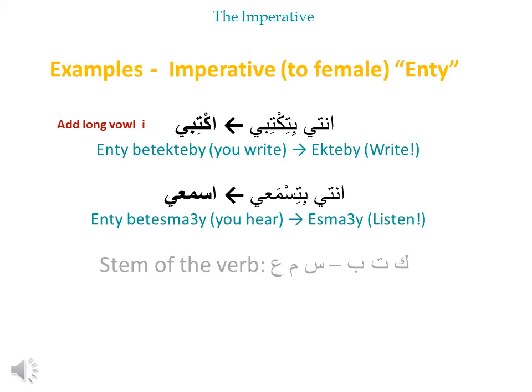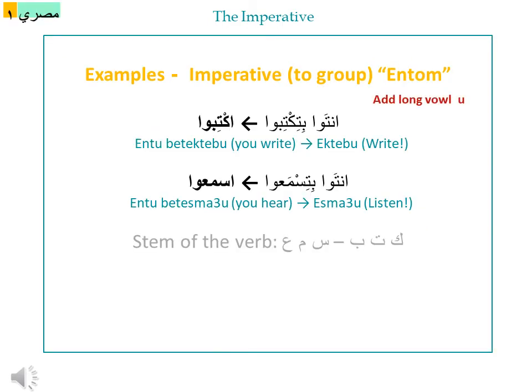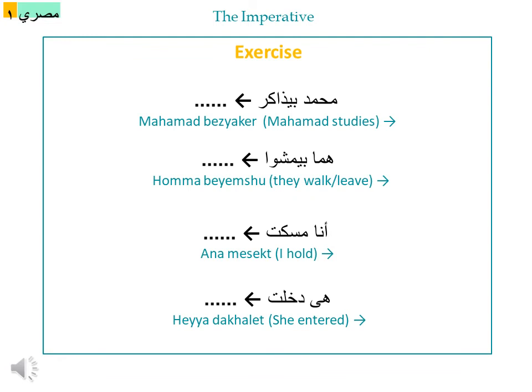Now let's see the same two verbs with plural — if you are asking a group of people to do the same thing. For plural, بتكتبي becomes بتكتبوا, and the imperative is اكتبوا — you add او at the end. So اكتب becomes اكتبوا for a group.